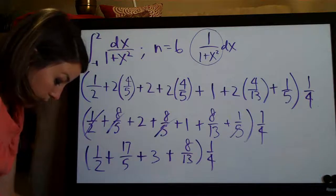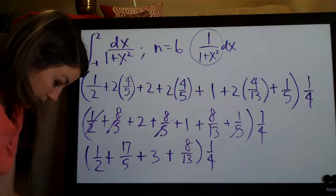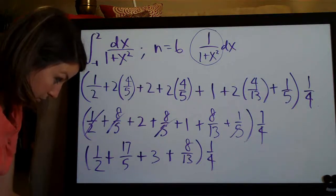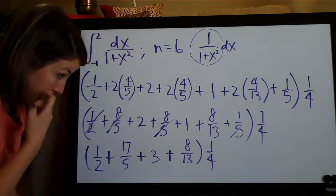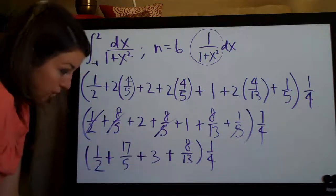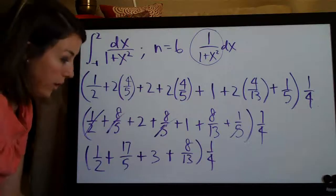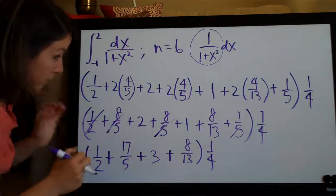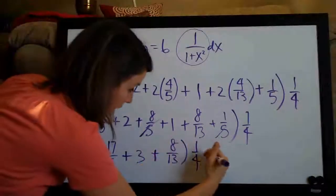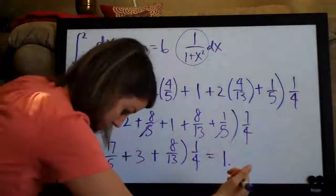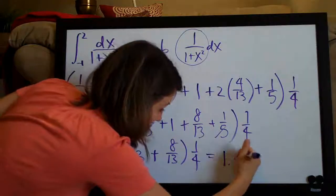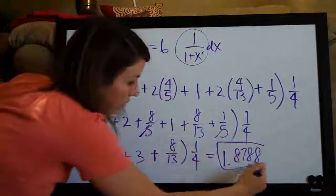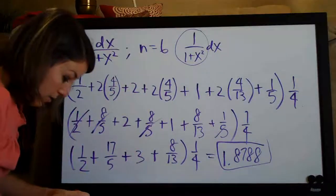So, I'll just do 1 divided by 2 plus 17 divided by 5 plus 3 plus 8 divided by 13. And I'll get that answer and then I will just divide that whole thing by 4. Which is the same thing, obviously, as multiplying by 1 fourth. So, I divide that whole thing by 4 and I get, as my final answer, 1 point, yeah, let's round that to 8, 7, 8, 8. And it gives you more decimal places but you could round to 4. I think that would be sufficient.